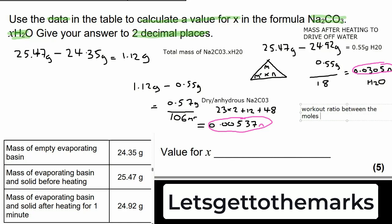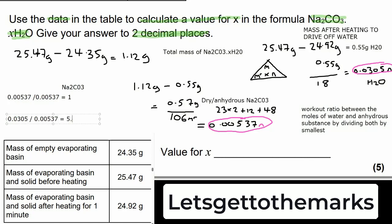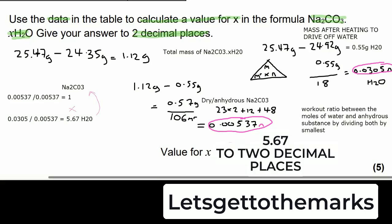Now we've got two sets of moles, one for the water, one for the dry solid that's left behind once you evaporate the water. What we need to do is work out the ratio between these two sets of moles. You do that by dividing both numbers by the smallest. So we've got one lot of sodium carbonate compared to 0.0305 divided by 0.00537 which gives us 5.67.